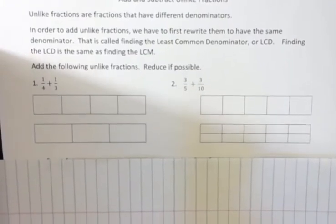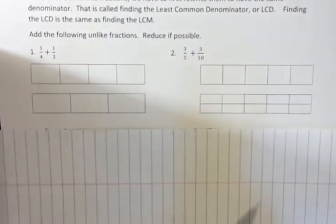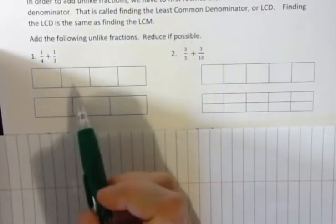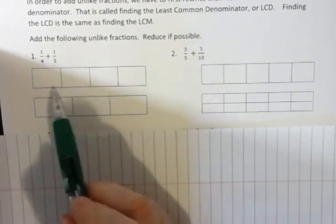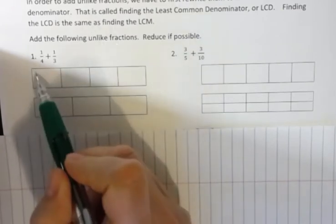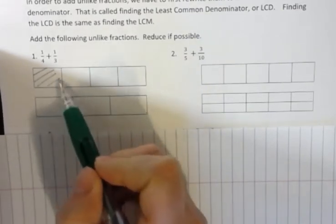Add the following unlike fractions and reduce if possible. So, the first two I'm going to use pictures to show you what's happening. I have one-fourth, and so here's something with four parts, and I have one-fourth shaded.